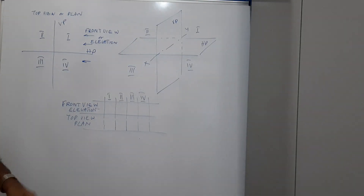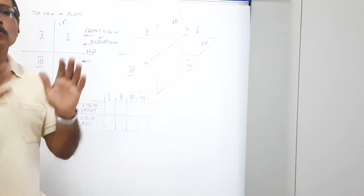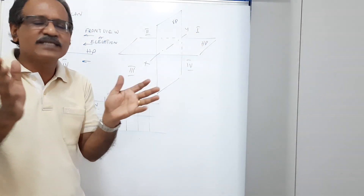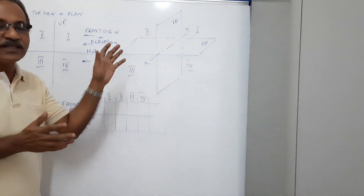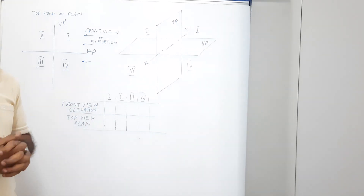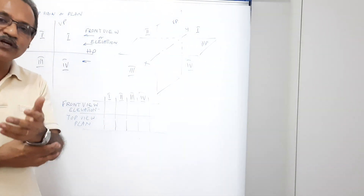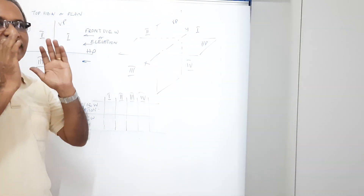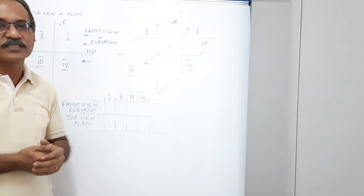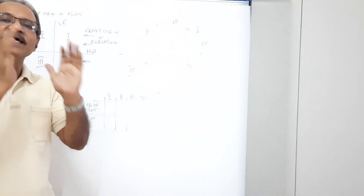When you draw an engineering object, you can keep the object in any of the four quadrants. Depending upon the quadrant where you keep the object, the views will be slightly different. In actual practice, light rays from our eyes are not parallel, but in engineering drawing — similar to how in physics we assume sunlight rays are parallel — we assume the light rays used to draw the views are also parallel to each other.